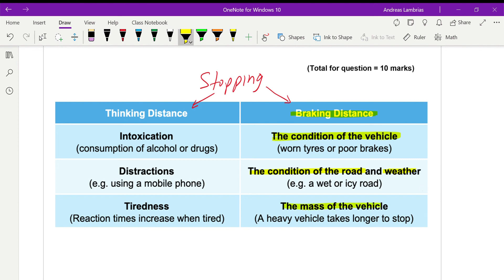Of course the mass of the car, if the car is heavier it's going to take longer to stop. And there's one more factor that affects both thinking distance and braking distance which is the speed of the car. If the car is moving faster it will cover more distance during the thinking time and more distance during the breaking time.